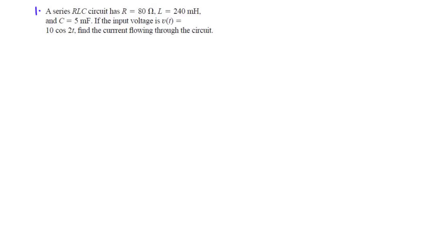Let's try some examples on series RLC circuits. Example 1: A series RLC circuit has resistance 80 ohms, inductance 240 mH, and capacitance 5 mF. If the input voltage V is equal to 10 cos 2T, find the current flowing through the circuit.